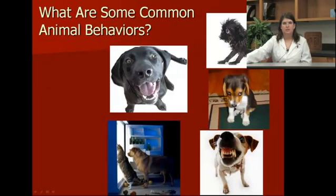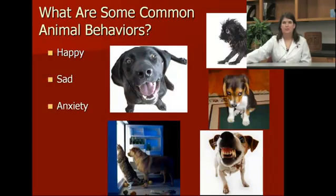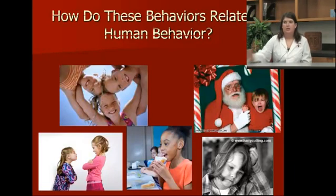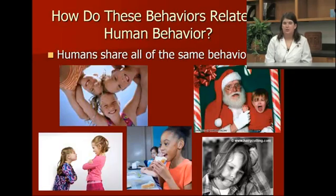What are some common animal behaviors? We're going to have a happy animal, a sad animal, an anxious animal, a hungry animal, and an aggressive animal. These behaviors relate to human behaviors in that we all share the same behaviors — we can be happy, sad, anxious, hungry, or angry.